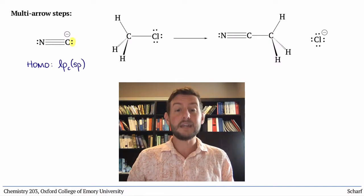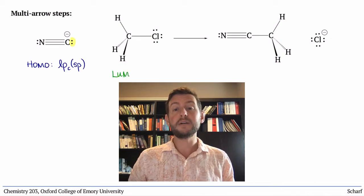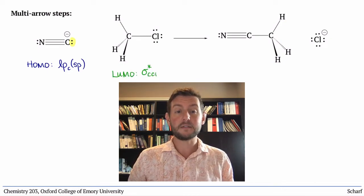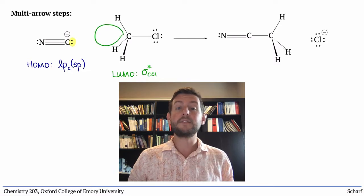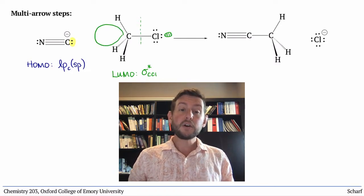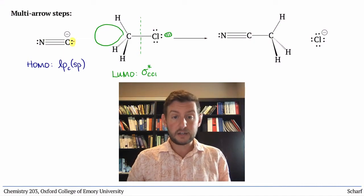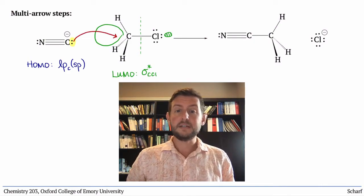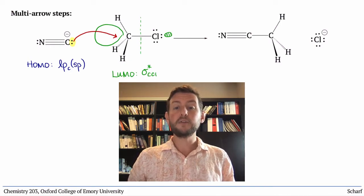Chloromethane is the electrophile. Its LUMO is CCl sigma star, which is largest on the side of the carbon, the less electronegative element. The curved arrows for this reaction start here and go here. This is the overlap of the HOMO and the LUMO.